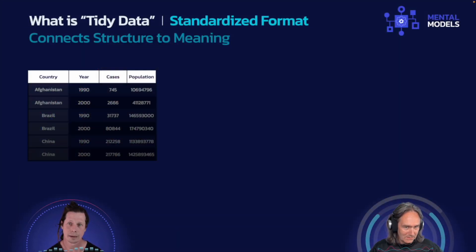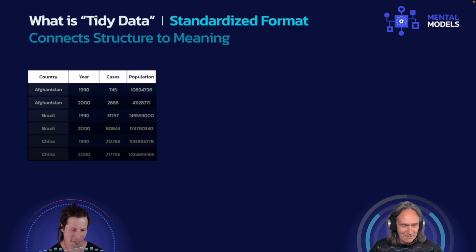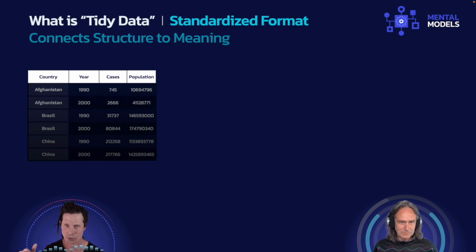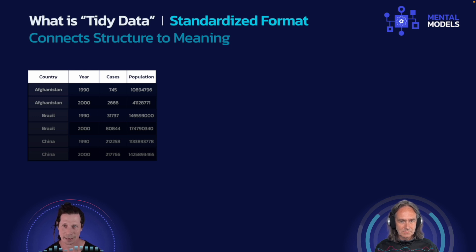I've got a whole mental model on how Tableau prefers tidy data, but while we're here just talking about what is data — what does it mean when we say that data is tidy? We're looking at a data set with countries and years and what looks like cases, so maybe some sort of disease cases and population data. Tidy data, just to define it here — we'll go into a whole mental model about it in the future — is this really important shape of the data that facilitates that iterative query process and facilitates that cycle of visual analysis to keep us in the flow state.